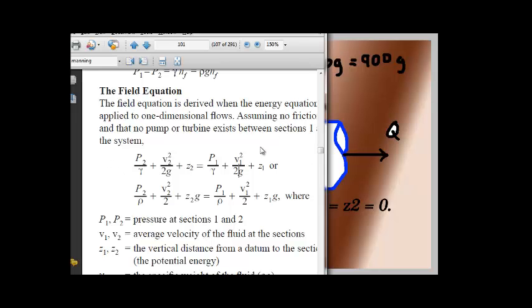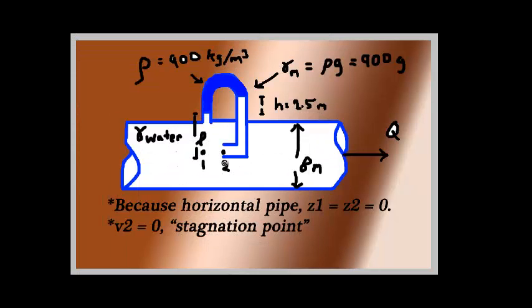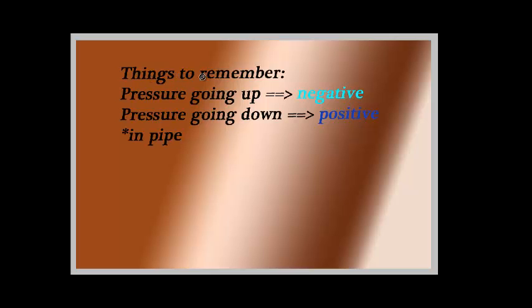So our points of interest is over here, point 1 and point 2. Now let's look over some things to remember. Pressure going up is negative. Pressure going down is positive in a pipe. What does that mean?